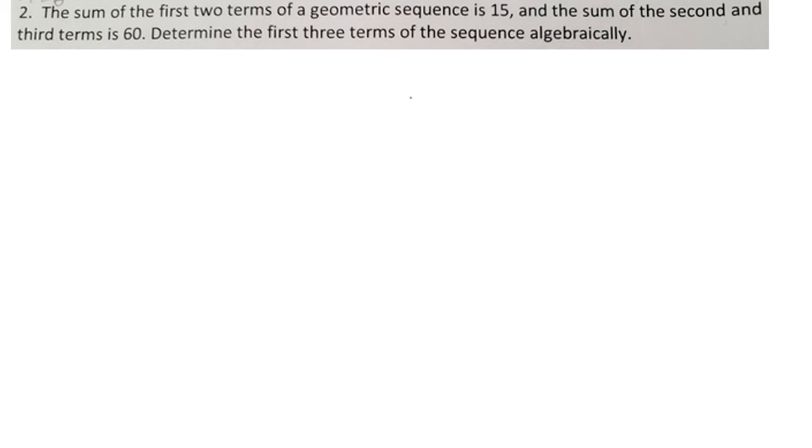The sum of the first two terms of a geometric sequence is 15, and the sum of the second and third terms is 60. Determine the first three terms of the sequence algebraically.